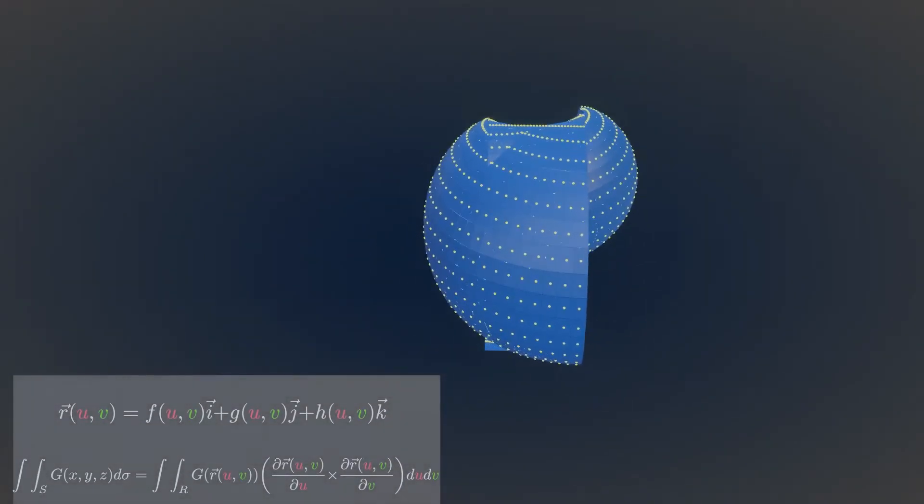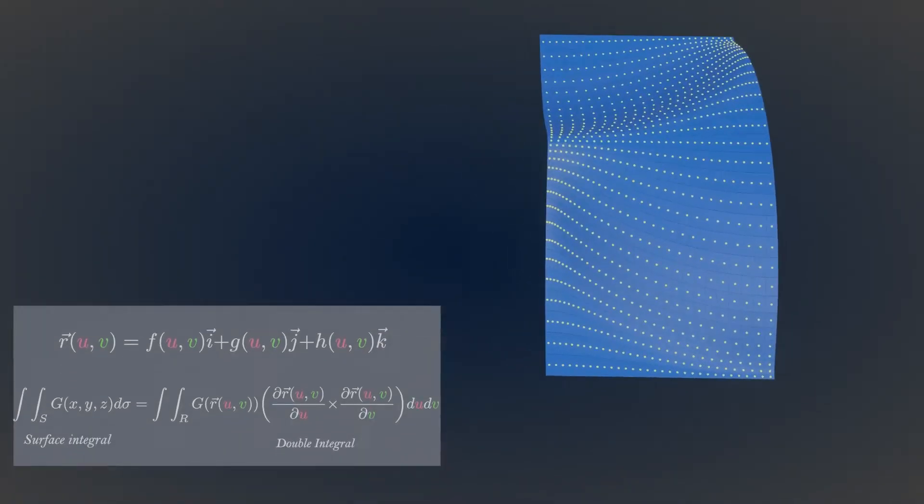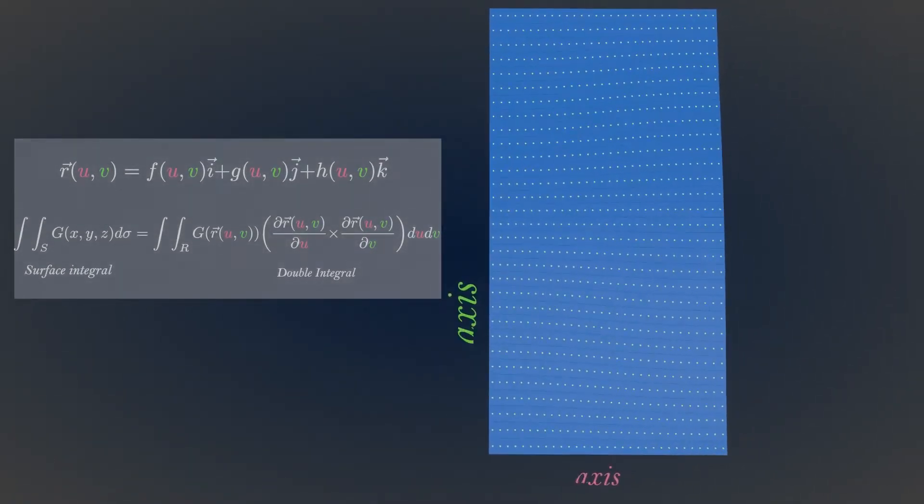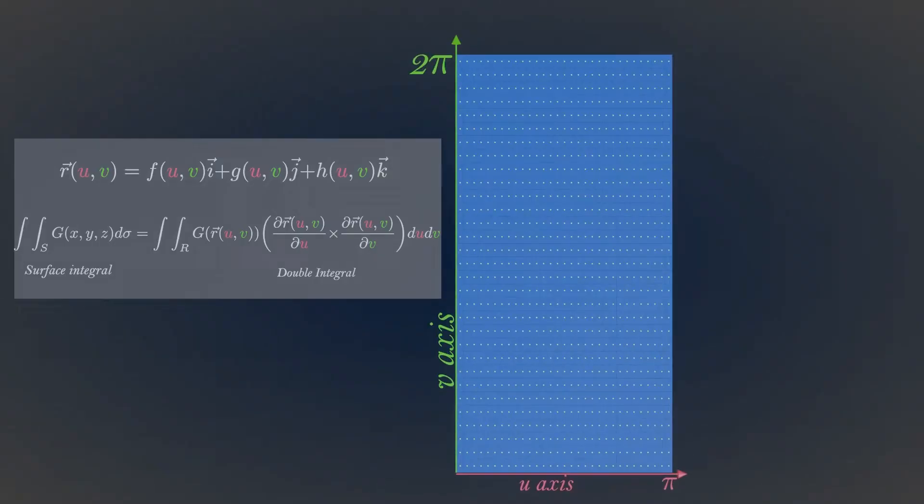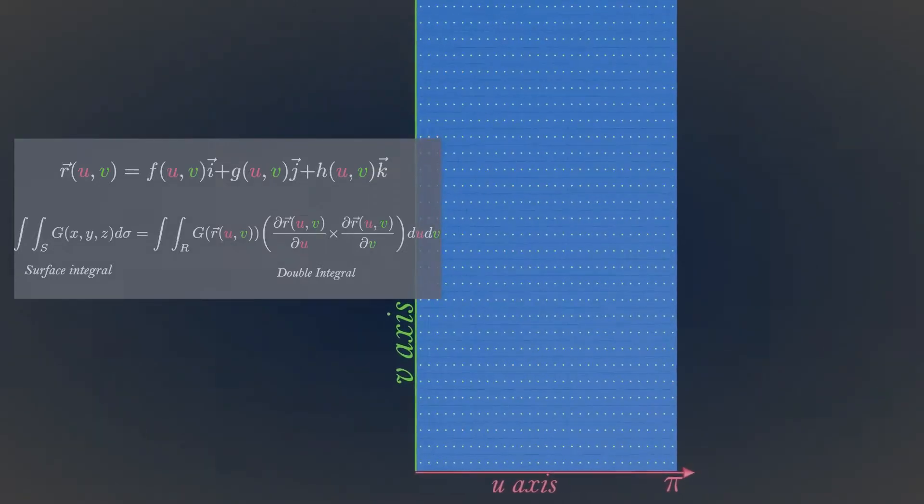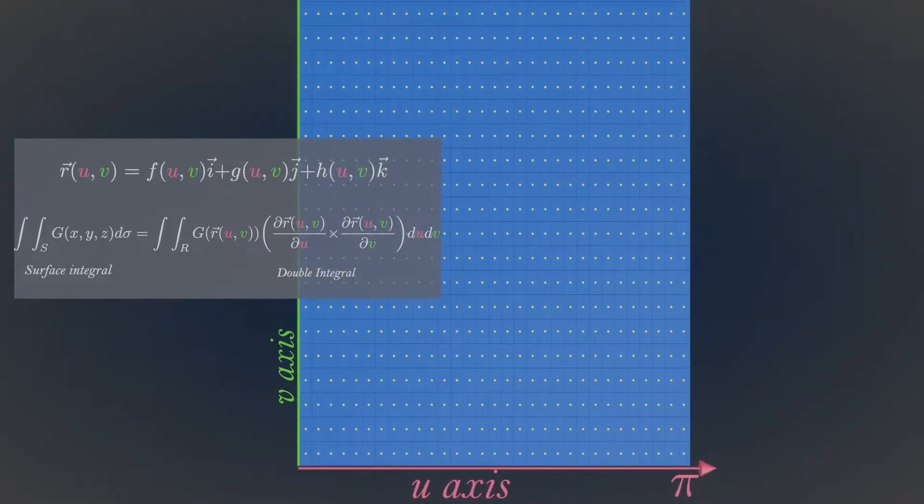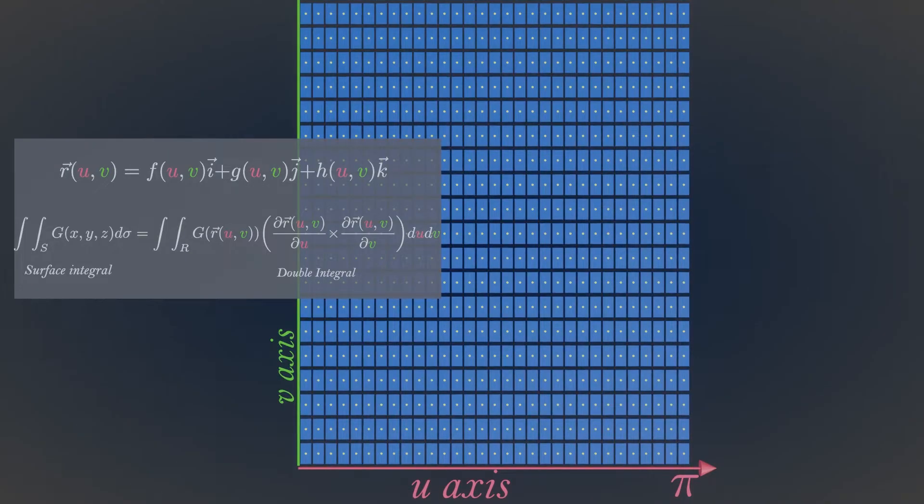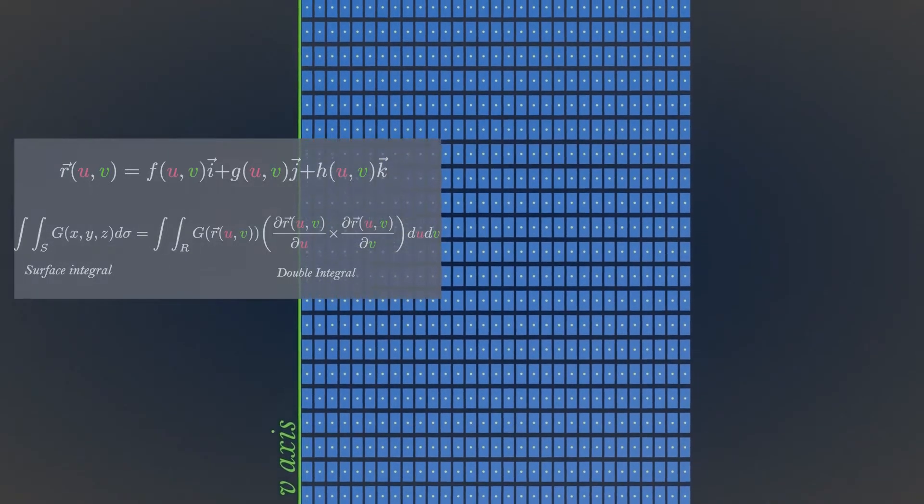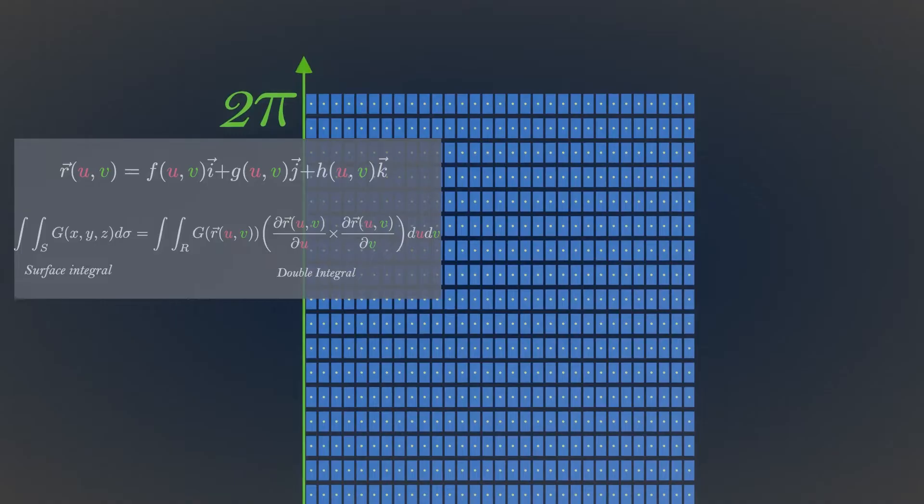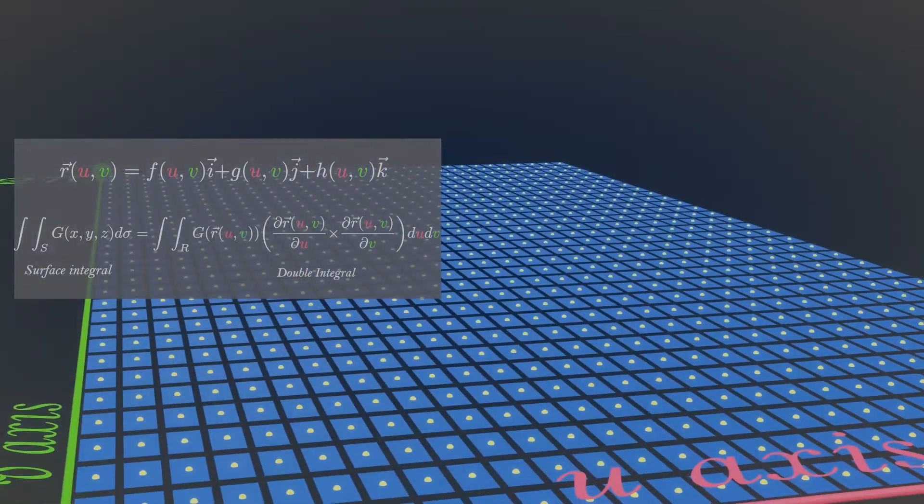Geometrically, it is similar to stretching and flattening out a surface into a plane on U and V axis. Now, after converting surface integral to double integral, you can calculate area of sphere by just summing up area of tiny pieces of these rectangles. And, this summation is easily done by double integral.